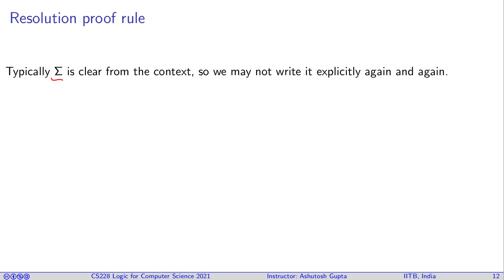But typically sigma is clear from the context. Why is that the case? Because in our earlier proof system, there were some rules pulling things from the left-hand side, and we were sometimes introducing things on the left-hand side to make the reasoning work. But in this case, when resolution system starts, it doesn't play with sigma. Sigma is always fixed when you are doing the derivation. So we may not write it again and again on the left-hand side.